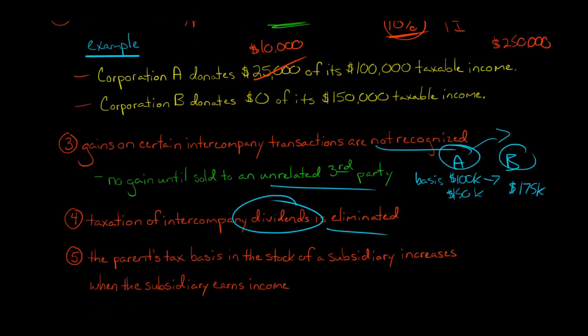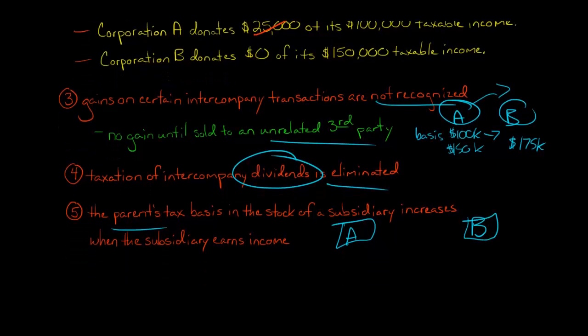In terms of the parent, so remember, for you to have an affiliated group and file a consolidated tax return, you always need one identifiable parent. That's one of the requirements. I talk about that in my video on the requirements for filing a consolidated tax return. So let's say we've got a parent, and we've got A, and then we've got B. And let's say that A paid a million dollars to get the stock of B. So then A has a million dollar basis in B stock. So B is the subsidiary of A.